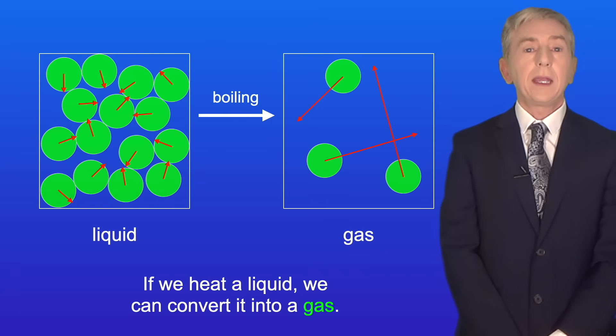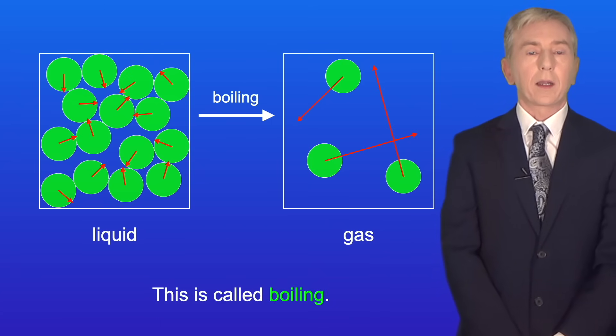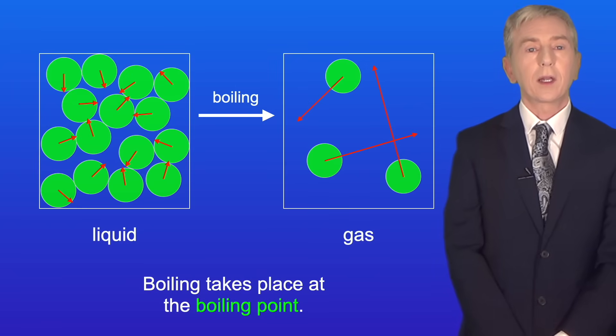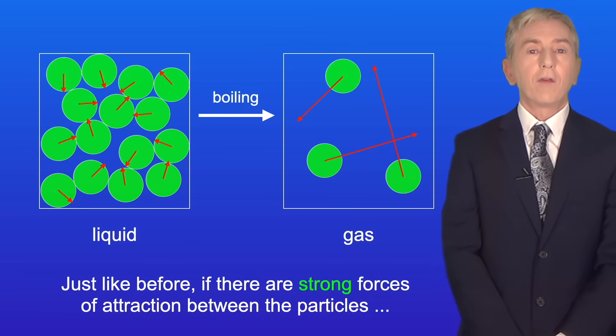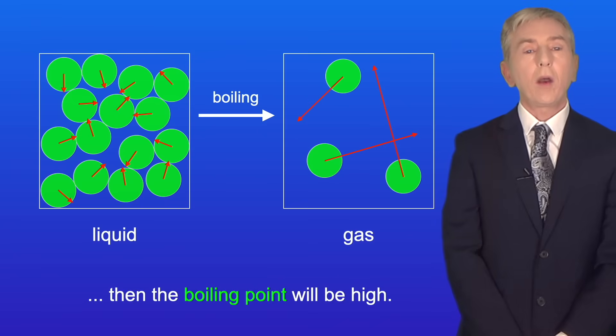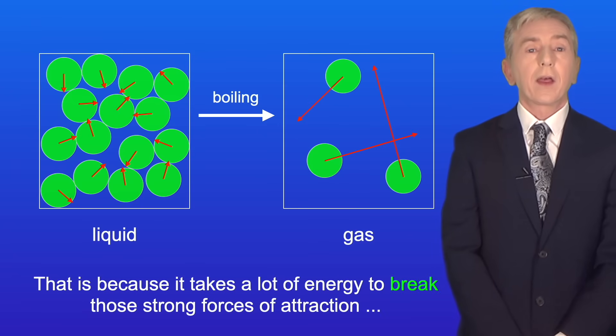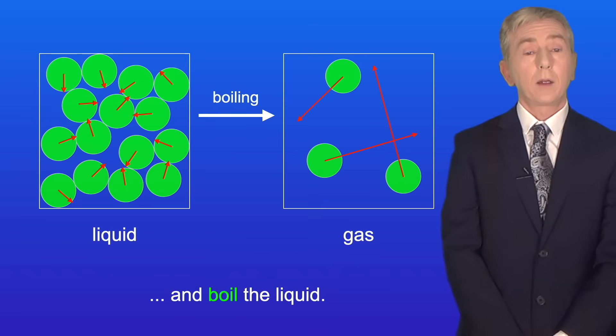Now, if we heat a liquid, we can convert it into a gas. This is called boiling, and boiling takes place at the boiling point. Just like before, if there are strong forces of attraction between the particles, then the boiling point will be high. That's because it takes a lot of energy to break those strong forces of attraction and boil the liquid.